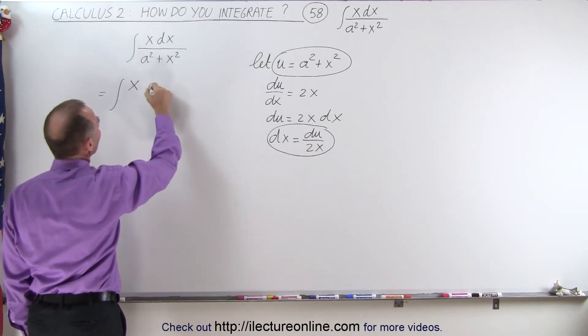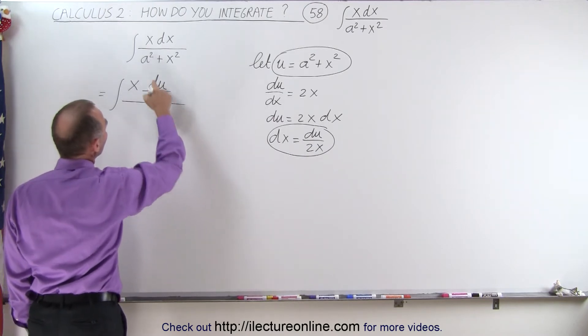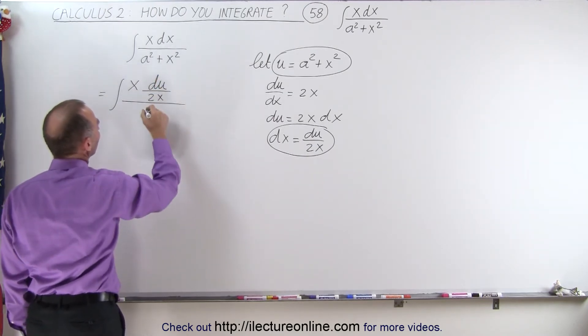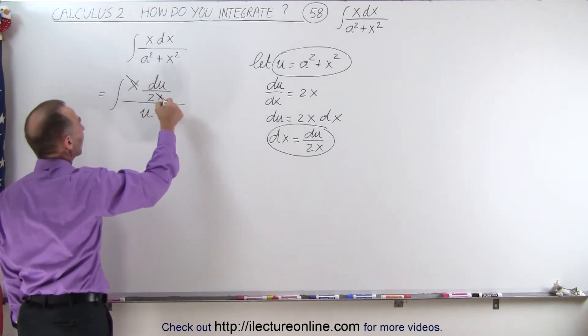But instead of dx, we're going to write du divided by 2x, and then in the denominator, instead of a squared plus x squared, this becomes u. Now, luckily,